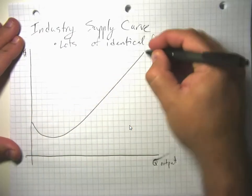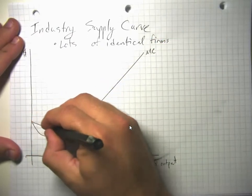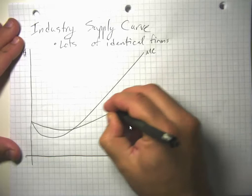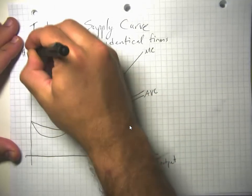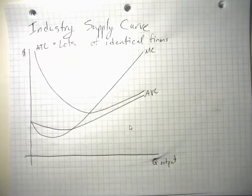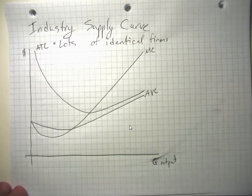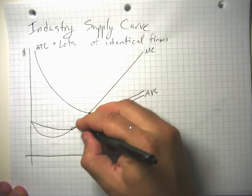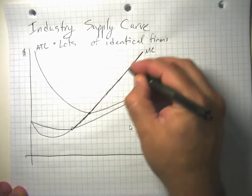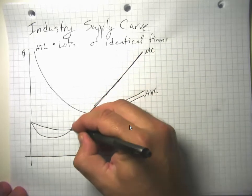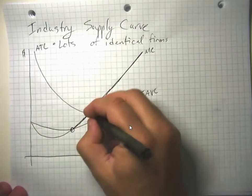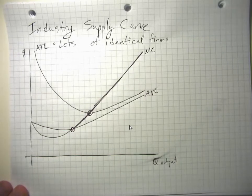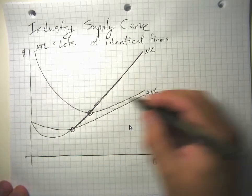So let's suppose we have a marginal cost curve, an average variable cost curve, and an average total cost curve. The supply curve for each firm in the short run is everything along the marginal cost curve that's above the minimum of the average variable cost curve. In the longer run, it's everything above the minimum of the average total cost curve, because firms need to break even.